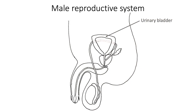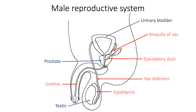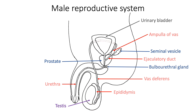The male reproductive system consists of the gonad testis, duct system including epididymis, vas deferens with its terminal dilated part called the ampulla, ejaculatory ducts and the male urethra. Accessory sex glands include prostate, seminal vesicle, bulbo-urethral glands and urethral glands of Littre. External genitalia include penis and scrotum.